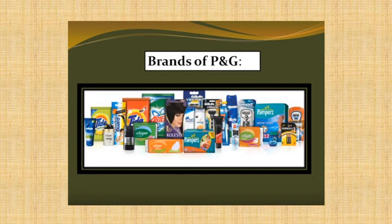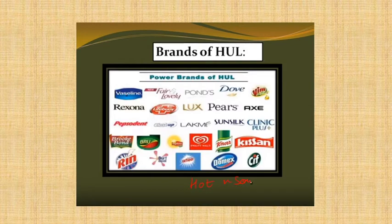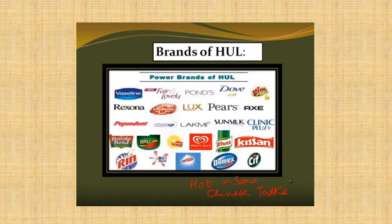These are the brands produced under HUL and Procter & Gamble — the biggest FMCG companies, and everybody is using their products. Another example is Maggi Noodles — they developed their product by introducing variants like Hot & Sour and Chinese Tadka, adding chatpata masala as a variation in their product line. This is how companies develop their product.